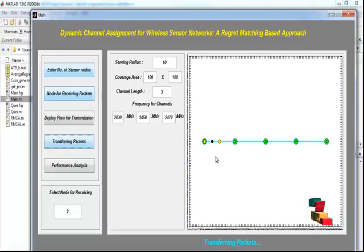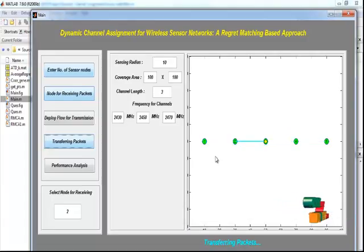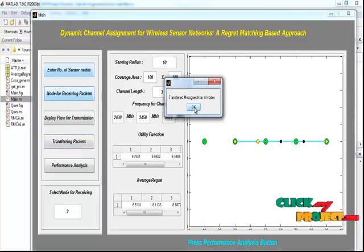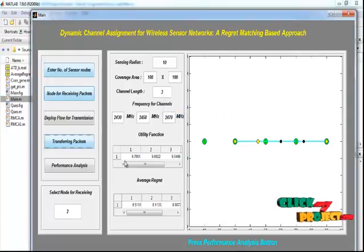Now the packets are transferred from channel 1 to 2. Likewise, the packets are transferred from the remaining channels to the selected channel, that is the second channel. So this process will be repeated for the entire sensor nodes. This will take some time for executing. Now the packets are transferring from the third channel to second channel and fourth channel to second channel. Now the packets are transferring from the fifth channel to second channel. This will take some time for executing. Once the process will be completed, we have obtained the message that is transfer messages from all nodes. So after that, we have obtained the utility function and also average regret value.